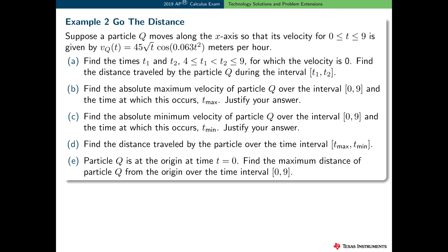Here's another example which expands upon the information given about particle q. We have the same velocity function, but let's consider the interval 0 to 9 this time. In this problem, you're asked to find times when the velocity is 0, to find the maximum and minimum velocity, a distance traveled, and the maximum distance from the origin. You'll need to use technology here.